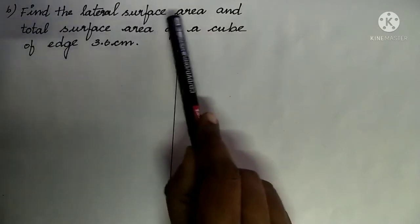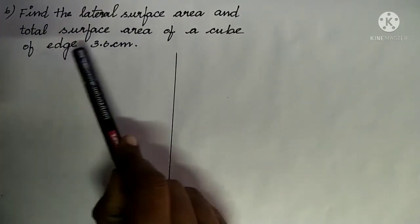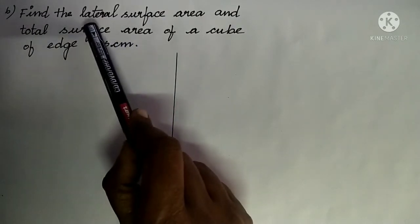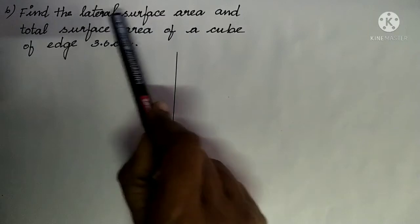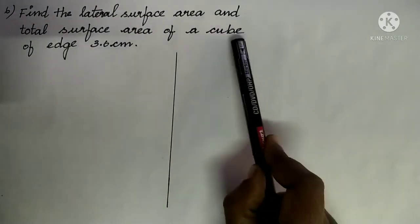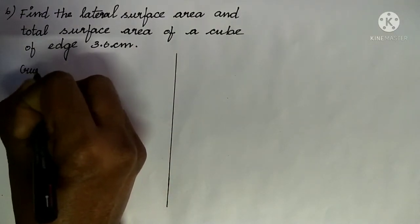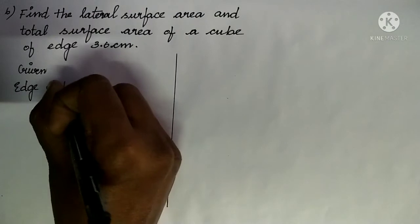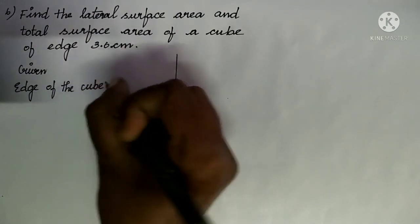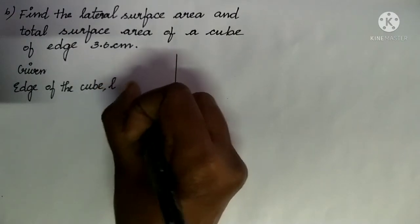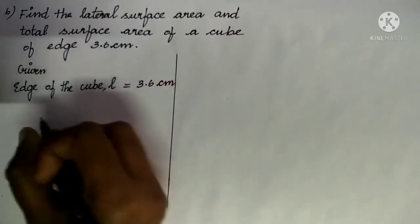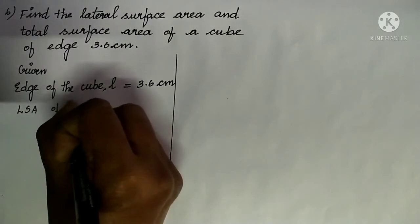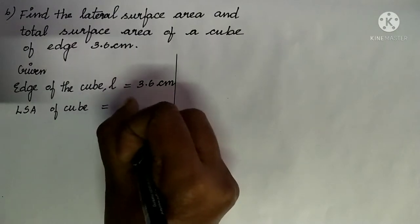Question number 6. Find the lateral surface area and total surface area of a cube of edge 3.6 cm. Here we are given the edge of a cube, which is 3.6 cm, and we are asked to find the lateral surface area (LSA) and total surface area (TSA) of the cube. We let the edge of the cube be L = 3.6 cm. The LSA of a cube is 4L².